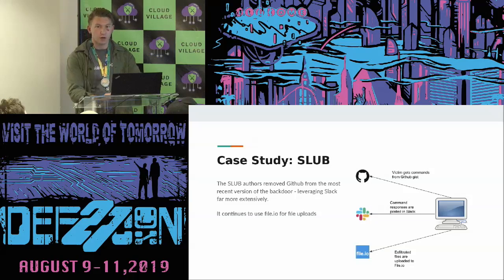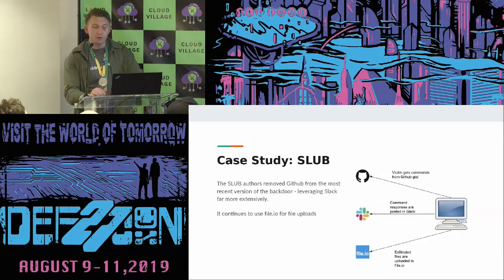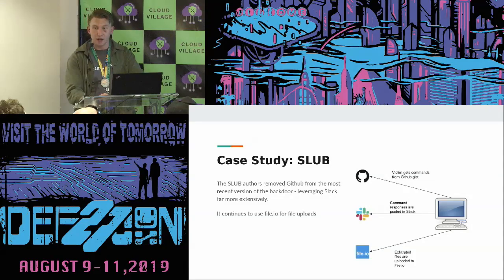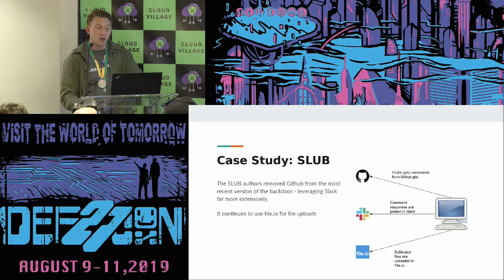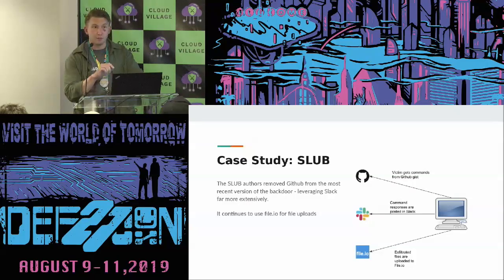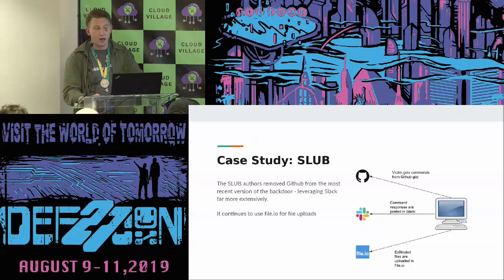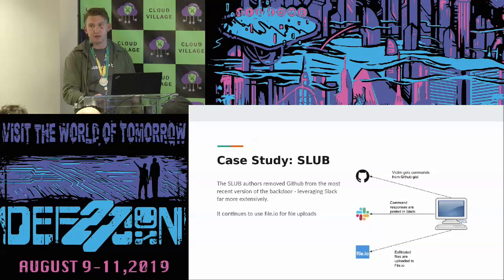I want to talk about Slub — Trend Micro wrote about it, and then we at Netscope wrote about it as well. One of the things Slub did was get commands from GitHub Gists, post command responses in Slack, and exfiltrate files by uploading them to file.io, which doesn't require any authentication or API keys. The Slub authors have since released a new version that drops GitHub and uses Slack a lot more — for passing commands and returning responses. It's a beautiful piece of malware. If you don't love malware, you're probably at the wrong conference.